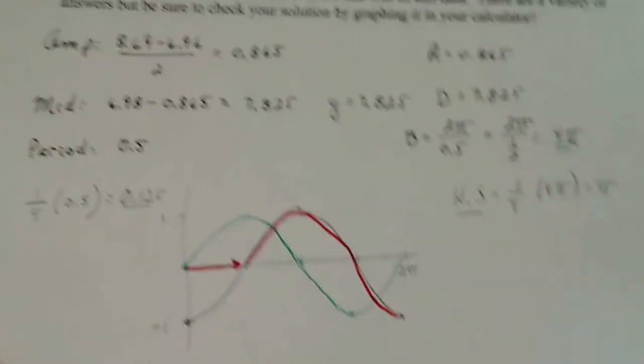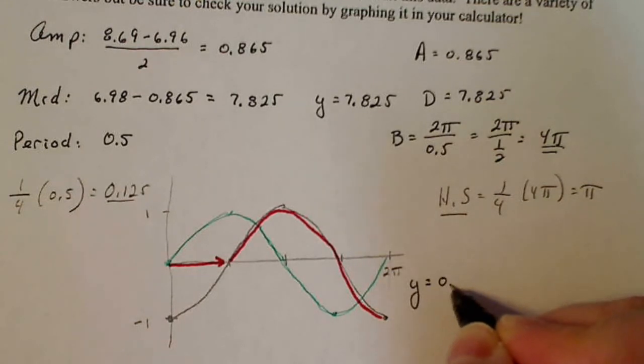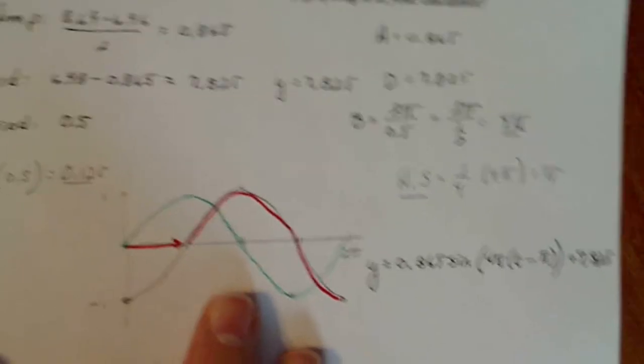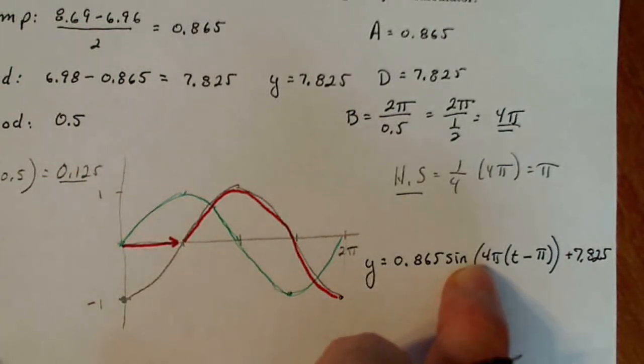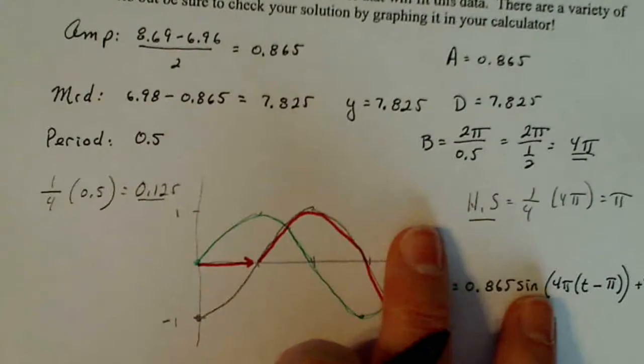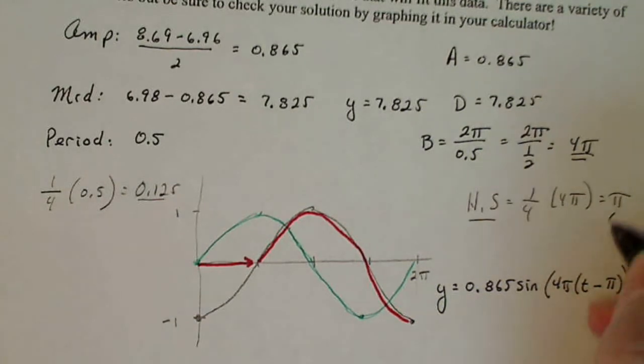So if I want to build my final equation, let's see. It's going to be y equals 0.865 sine, my B value four pi and T minus my horizontal shift in parentheses, remember, plus 7.825. I'm running out of room there. So there's my A, my B, my horizontal shift and D. Horizontal shift is actually C over B, but we're not going to worry about that right now. I just know that it needs to go there. All right, if I multiply this, remember, if I multiply the period by one quarter, I have to multiply B by one quarter to get the right value for my equation.